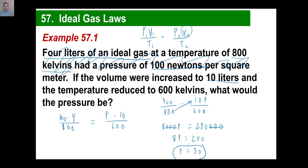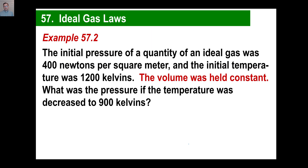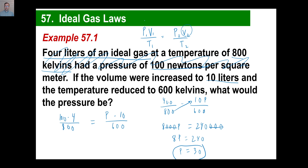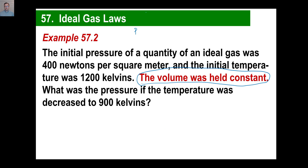Here is a different type. The initial pressure of a quantity of an ideal gas was 400 newtons per square meter and the initial temperature was 1200 kelvins. The volume was held constant — aha! So your new equation is P sub 1 over T sub 1 equals P sub 2 over T sub 2 — no volume at all needed.